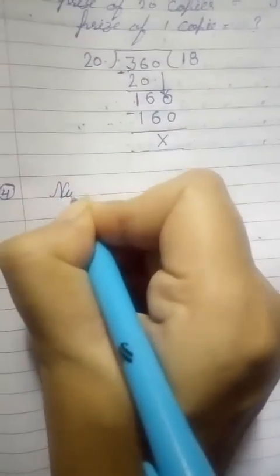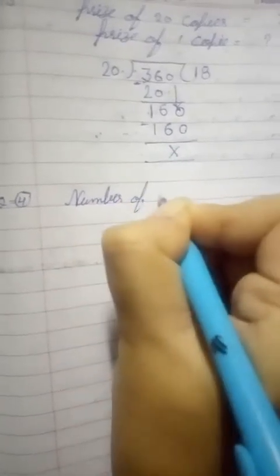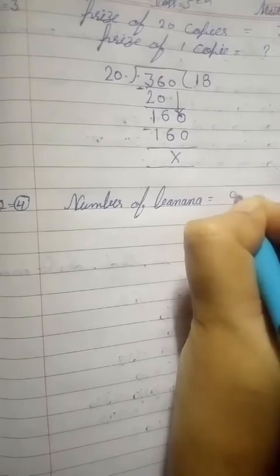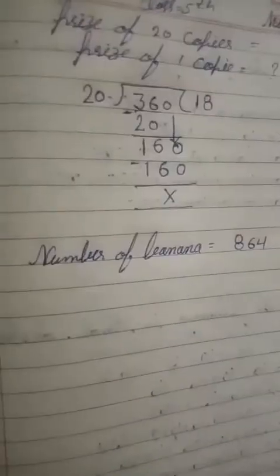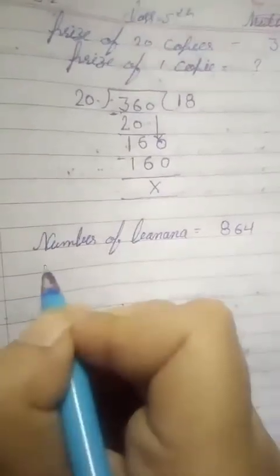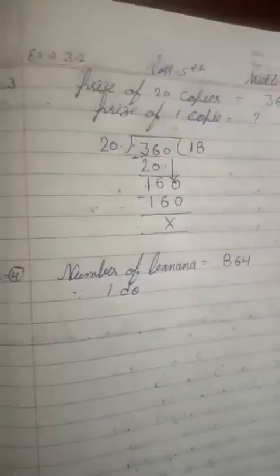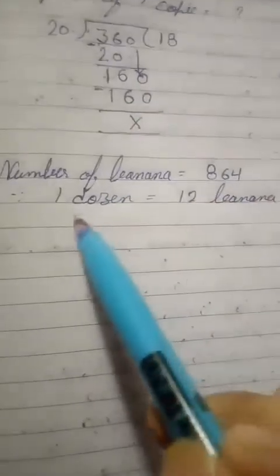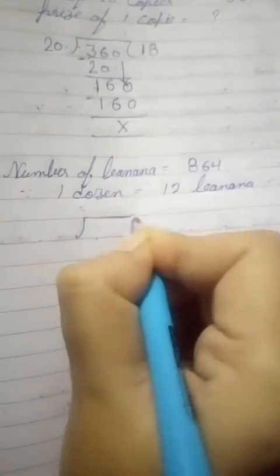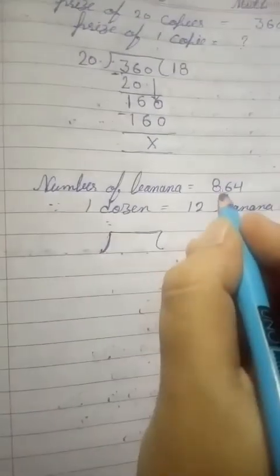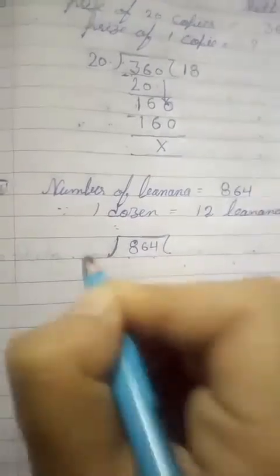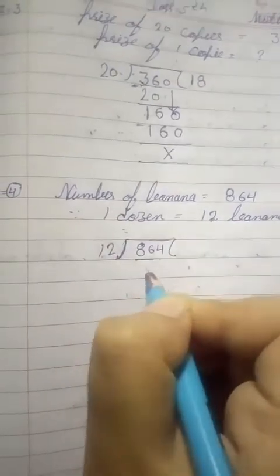First write: number of bananas is 864. And we know that one dozen equals 12 bananas. In this question, division type question: this is dividend and this is divisor. 864 write here, and 12. Take two digits which is 86.